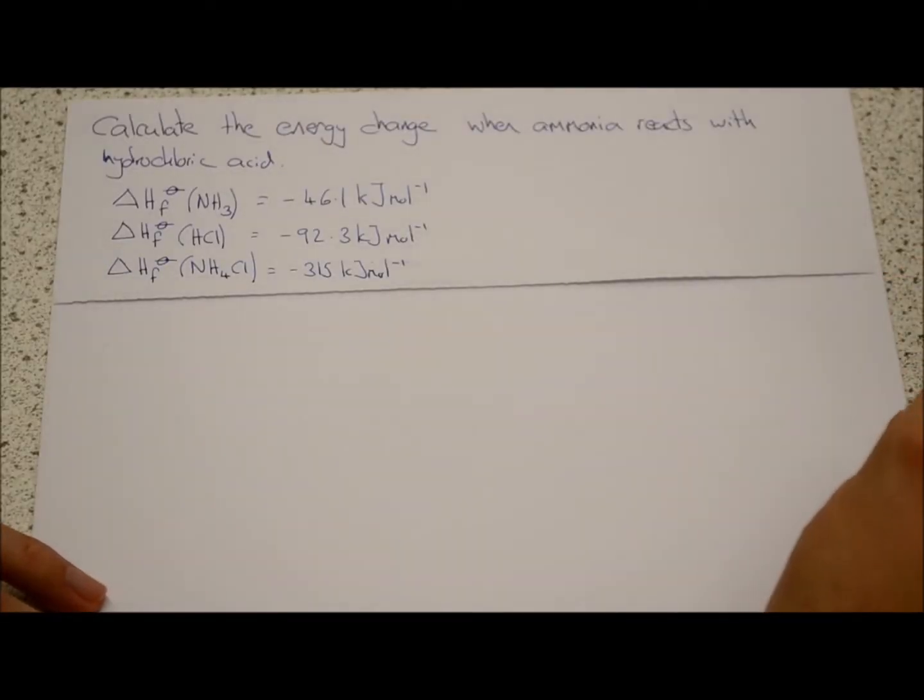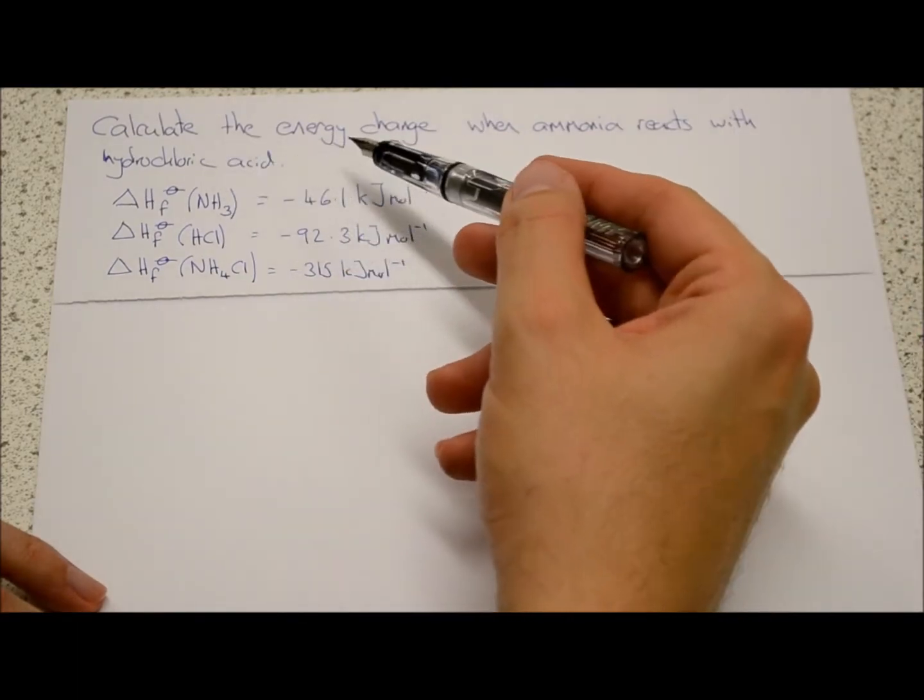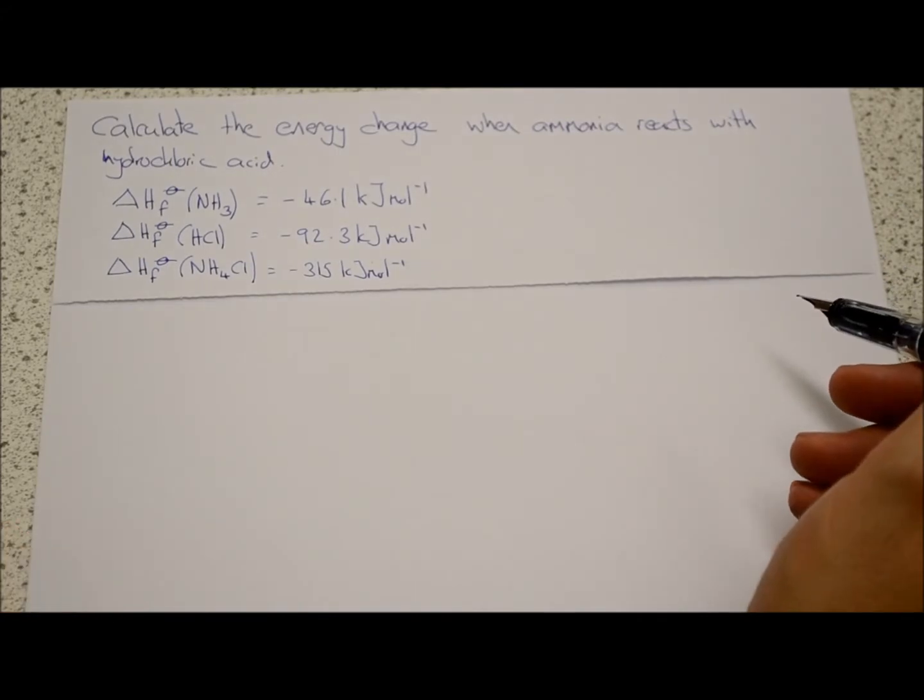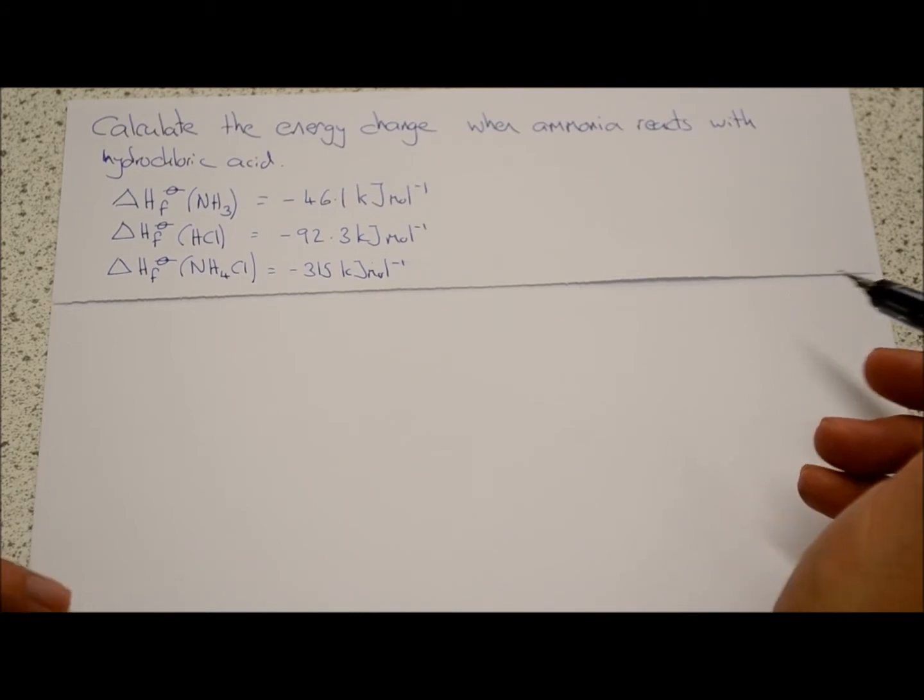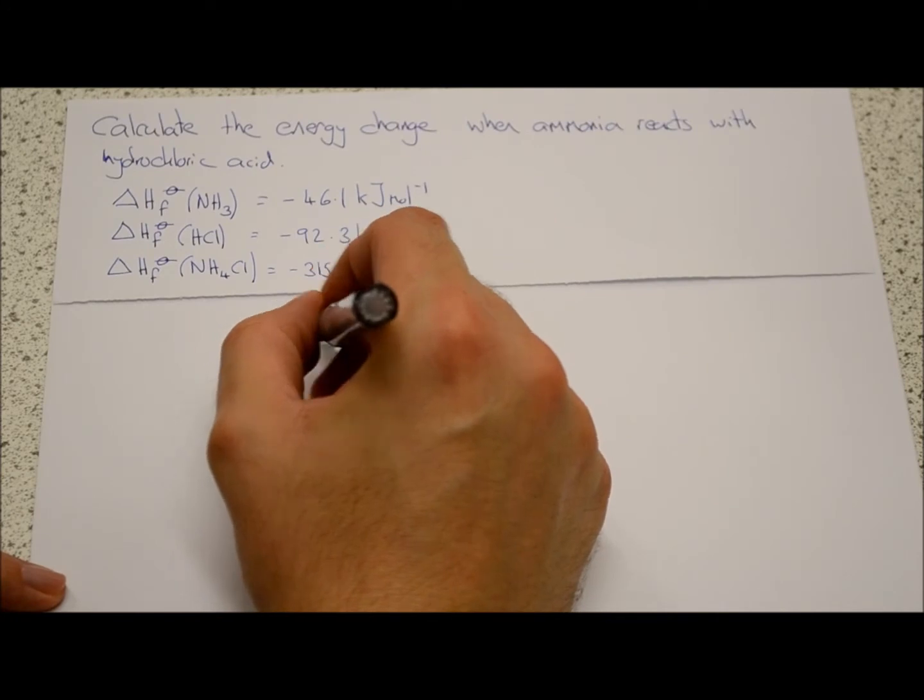Okay, we've got a Hess's law question here. Calculate the energy change when ammonia reacts with hydrochloric acid. We've been given some standard enthalpies of formation. In a Hess's law question, we're looking at the fact that irrespective of the path taken, the energy change is always the same. So we start off by writing out the equation.